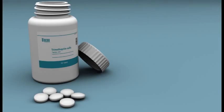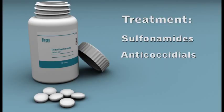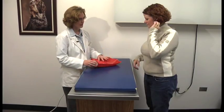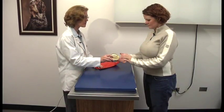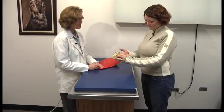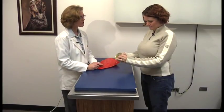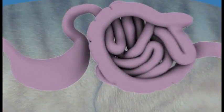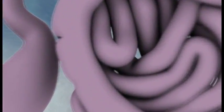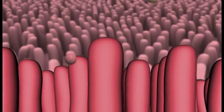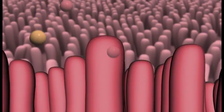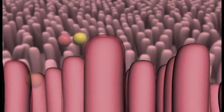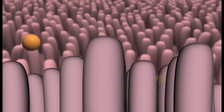The treatment for coccidial infections consists of either a course of an oral sulfonamide drug or an anti-coccidial drug. During your cat's treatment, your veterinarian may recommend that you feed your cat a GI diet. GI diets are formulated with ingredients that are highly digestible, providing the nutrients your cat needs while the intestinal mucosa heals.